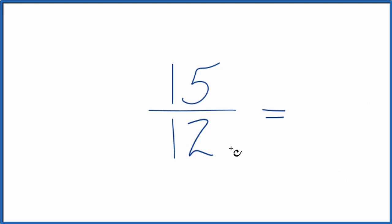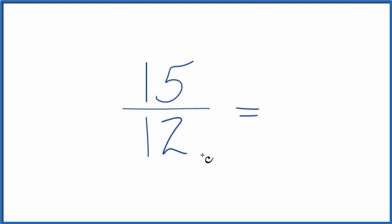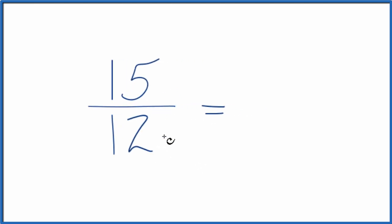So for 15 and 12, we need to find a common factor, something that goes into 12 and 15. Three would go into 15 and 12 evenly.